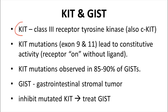Let's start with KIT. KIT, often called C-KIT, is a class 3 receptor tyrosine kinase. The gene that encodes KIT can undergo mutations in exons 9 or 11 to generate a constitutively active receptor, meaning the receptor is in its on state without binding its endogenous ligand. These KIT mutations can lead to the formation of tumors. In fact, 85 to 90 percent of GISTs, which are gastrointestinal stromal tumors, have KIT mutations.